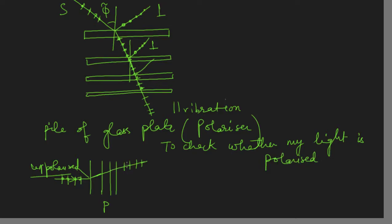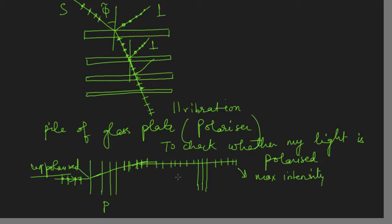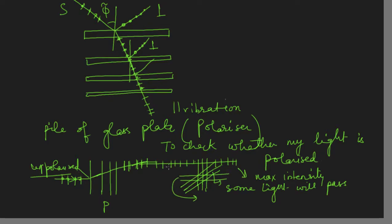If my vibrations are parallel to the plane, I use another pile of glass plates and pass these vibrations through it. If vibrations are coming in parallel, all will pass and I will get maximum intensity. Now I start rotating this pile of glass plates. If I make the pile perpendicular, then my vibrations are confined in only one direction and some light will pass. If I make them fully perpendicular, no vibrations will pass and I will get zero intensity.